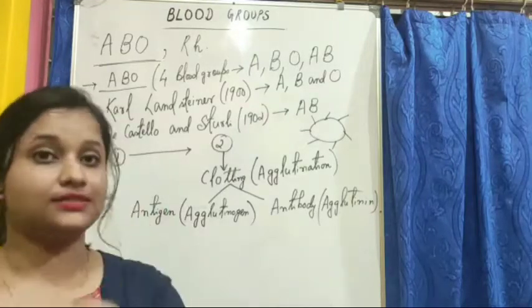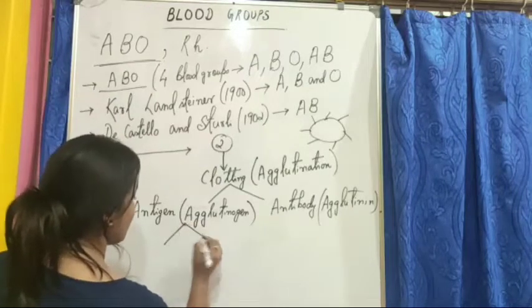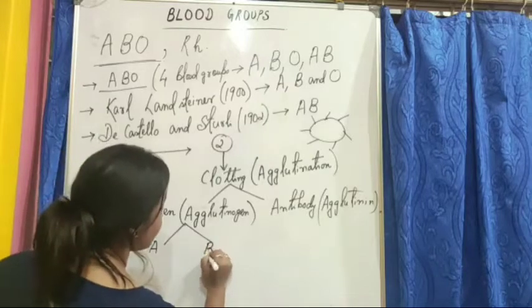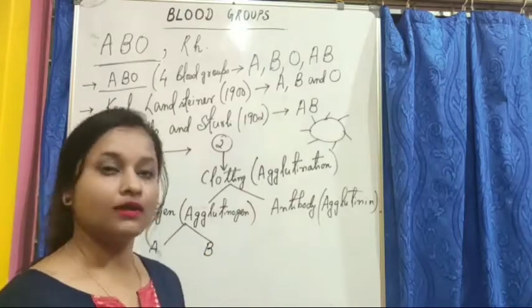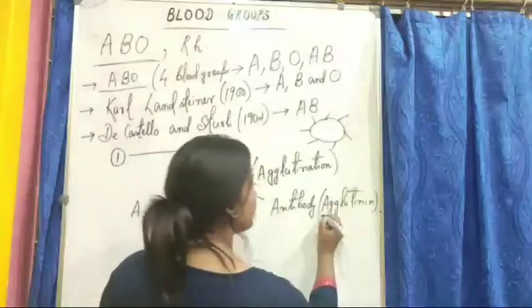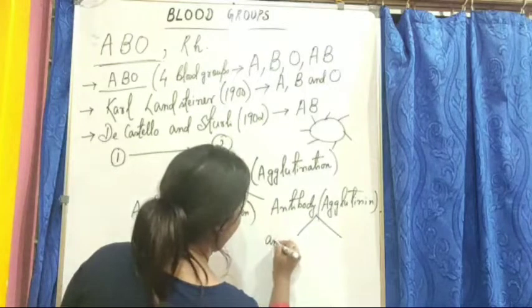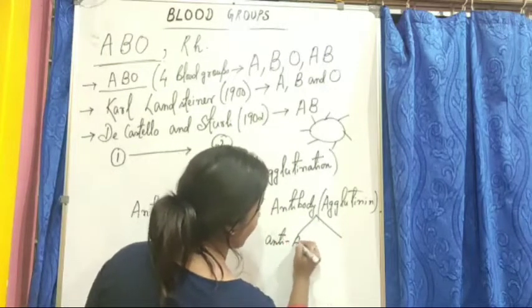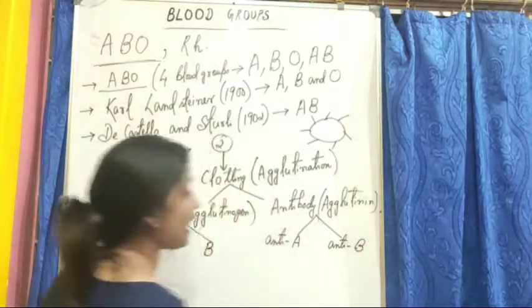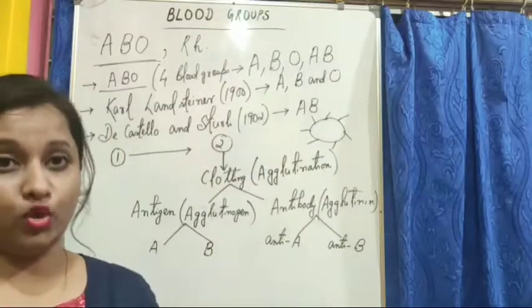There are two antigens in our blood: antigen A and antigen B. Similarly, there are two antibodies: anti-A and anti-B. These are the two antigens and two antibodies that define the ABO blood group system.